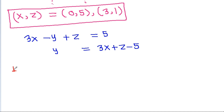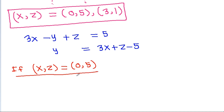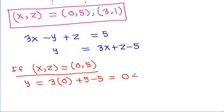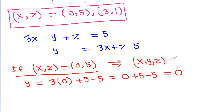So if (x, z) is equal to (0, 5), then y will be equal to 3 times 0 plus 5 minus 5, and it is 0. So (x, y, z) will be equal to (0, 0, 5).